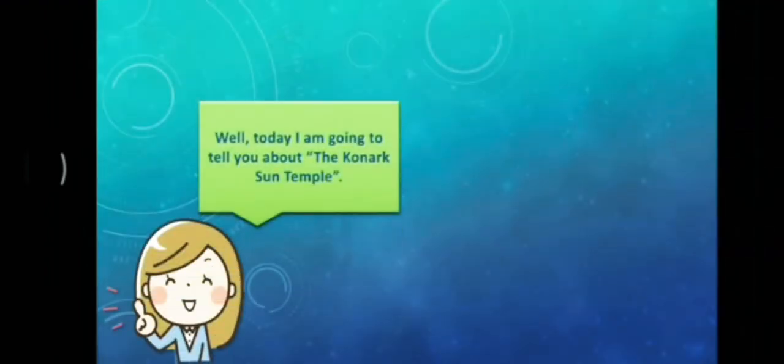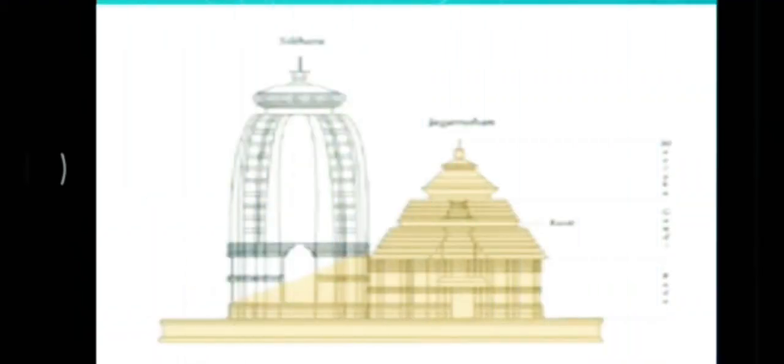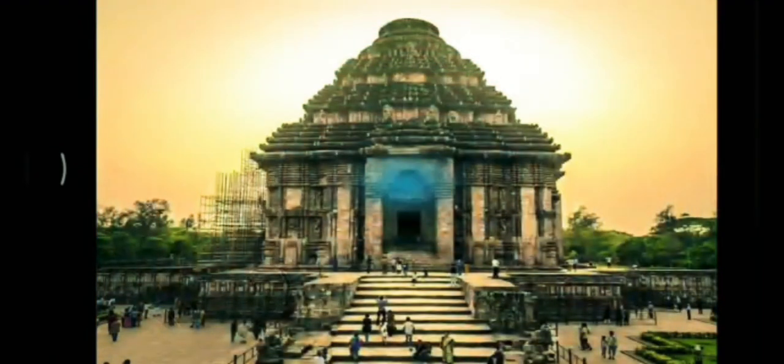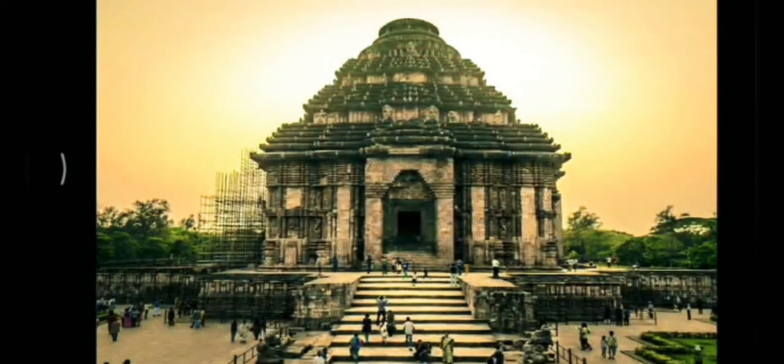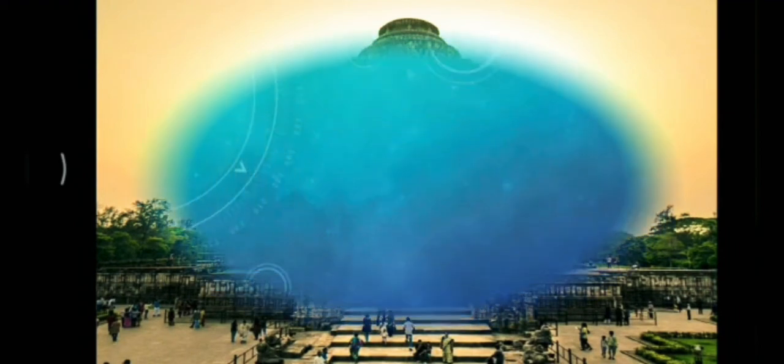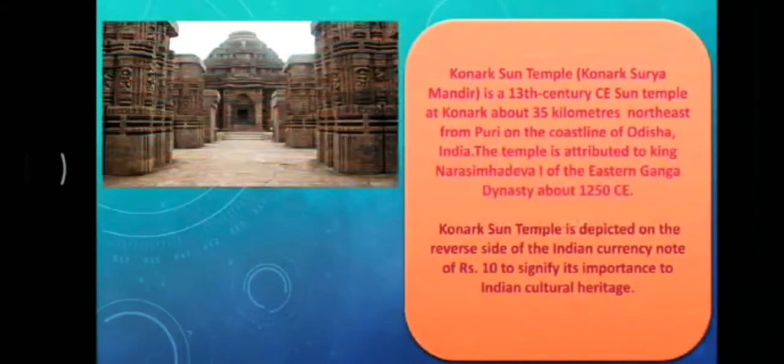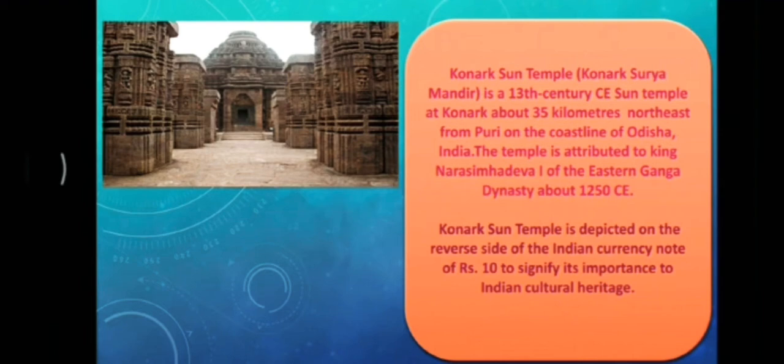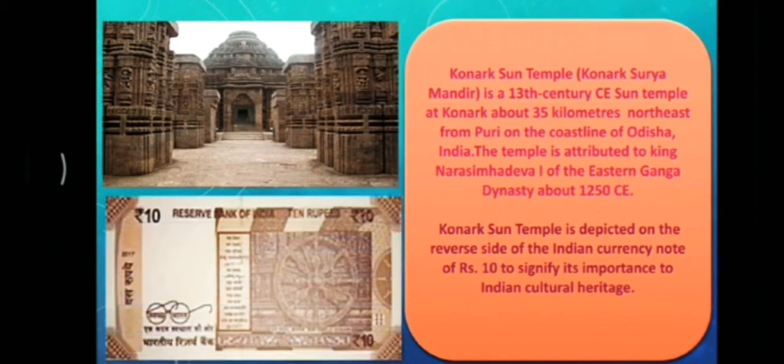Today, I'm going to tell you about the Konark Sun Temple. Konark Sun Temple is a 13th century CE Sun Temple at Konark. It is attributed to King Narasimha Deva I of the Eastern Ganga dynasty, about 1250 century. And do you know that it is also depicted on the reverse side of the Indian currency note of Rs. 10.